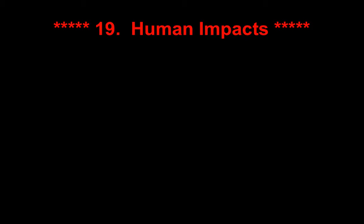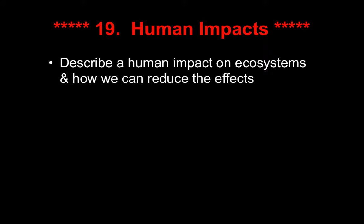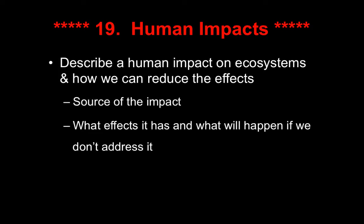Entry 19: Human Impacts. Note that this is also a required entry, and you will also be doing a small group project and presentation involved with this entry. You are going to describe a human impact on ecosystems and how we can reduce the effect of this impact. I want the source of the impact, what effect it has, and what will happen if we don't address it — so what effect is it having right now?